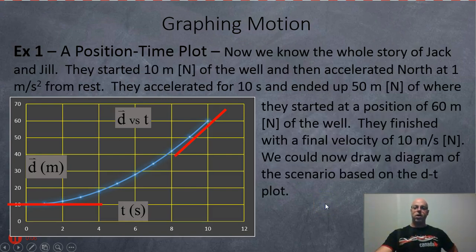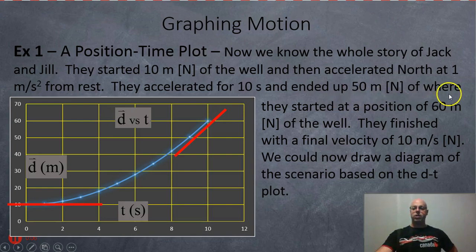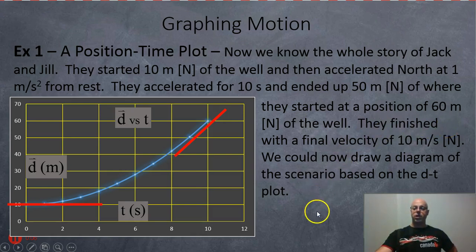Now we know the whole story: Jack and Jill started 10 meters north of the well, accelerated north at 1 meter per second squared from rest. They accelerated for 10 seconds and ended up 50 meters north of where they started, at a position of 60 meters north of the well, finishing with a final velocity of 10 meters per second north. So we could draw a picture of this now based on the graph.